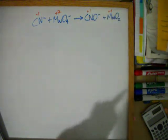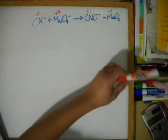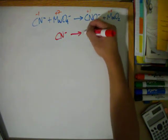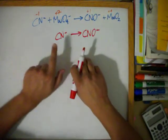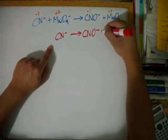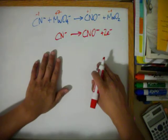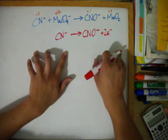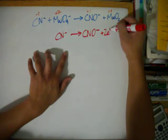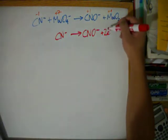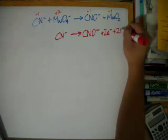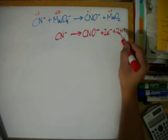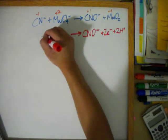The next step is to split it into half reactions. So we get cyanide producing CNO minus. This one has a negative 1 charge, and this cyanide has a plus 1 charge. Let's add two electrons. Now the next step is to balance the charges on both sides. This side has a negative 1 charge, and this side has negative 1, negative 2, negative 3 because of the two electrons. So let's add two hydrogen ions. Now let's balance the hydrogens and the oxygens — there's one oxygen and two hydrogens, so there must be one water.